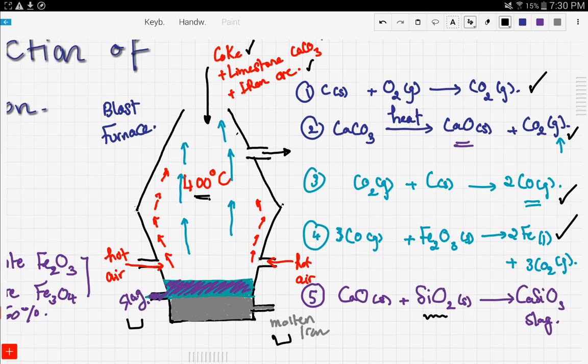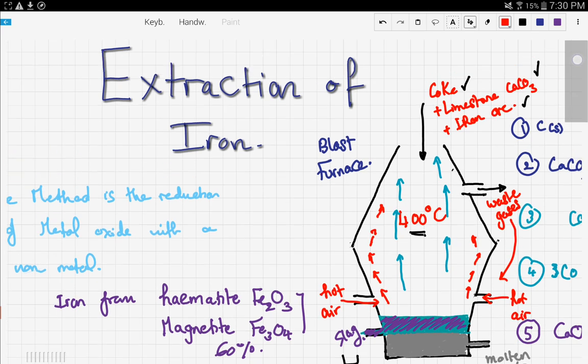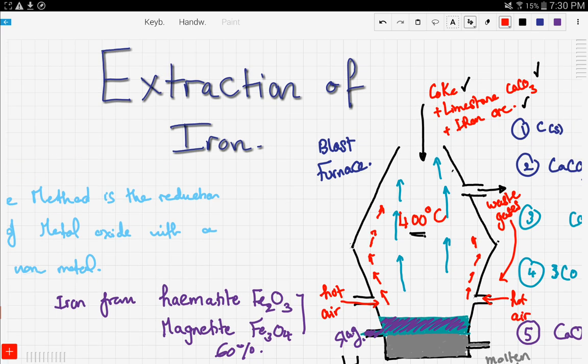One thing I forgot to mention is that here there are some waste gases, and those waste gases are used to further heat up the furnace. So these waste gases just go right here to heat up the whole process again. Nothing goes to waste; it's an economic procedure. That's that for the extraction of iron. In the next video, we're going to talk about the extraction of zinc. So stay tuned and good luck.